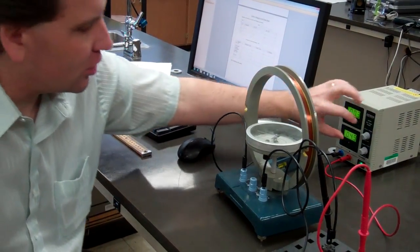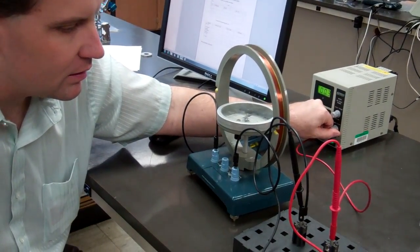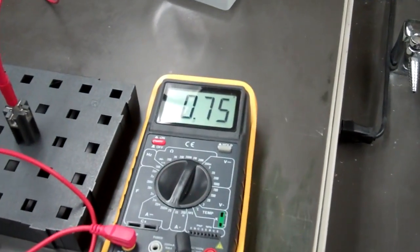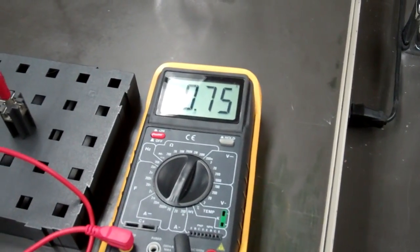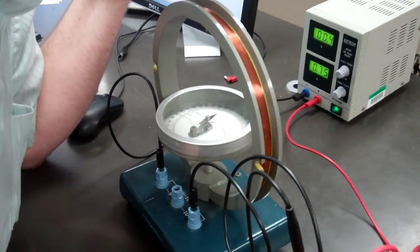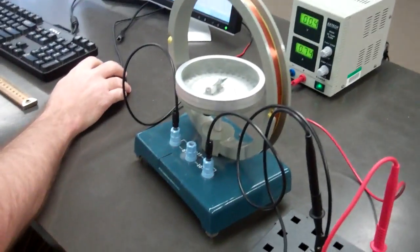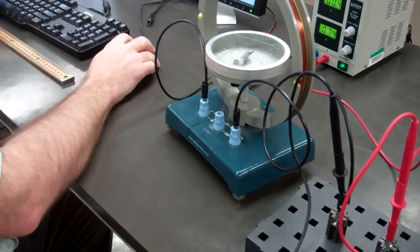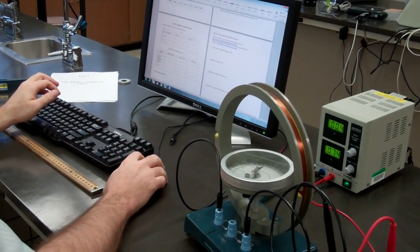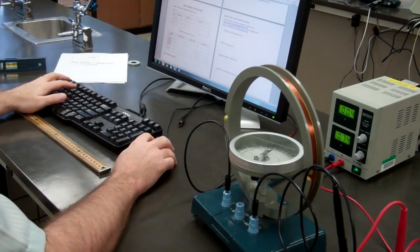And then what we do is we change the current to 0.75 amps and we measure it again. And now, instead of 18 degrees, it's actually reading 14 or 90 minus 14 would be 76. So we have 76, and 72 for the first one.